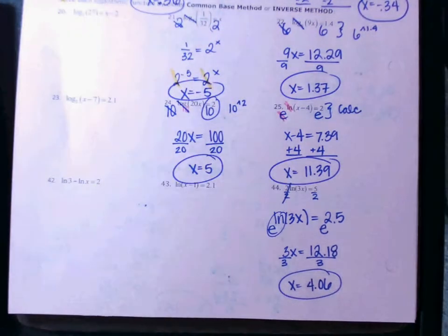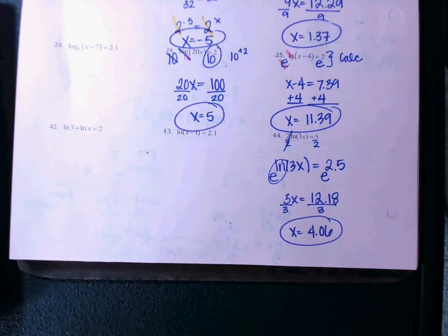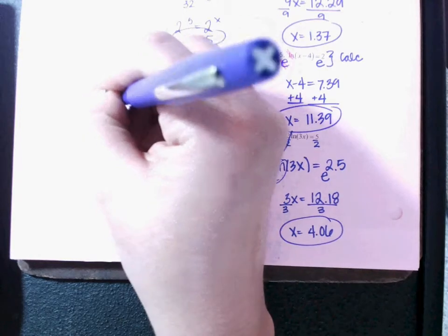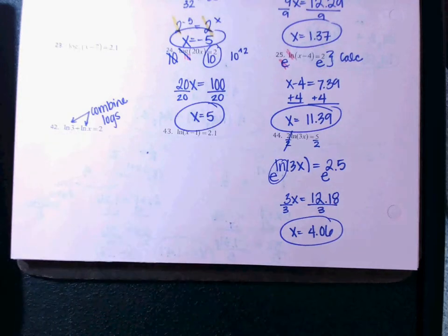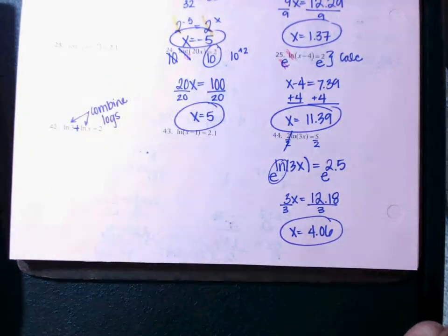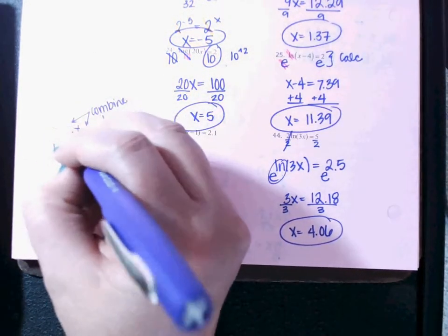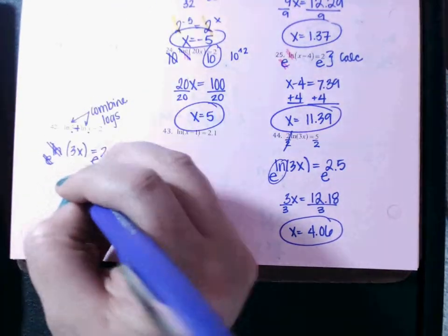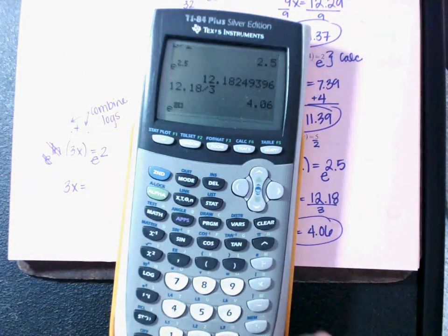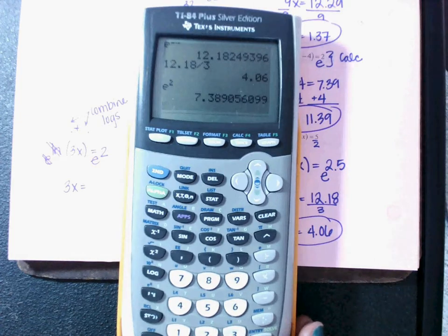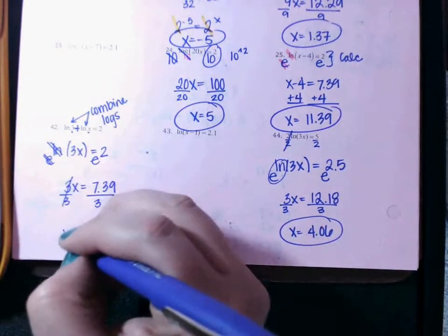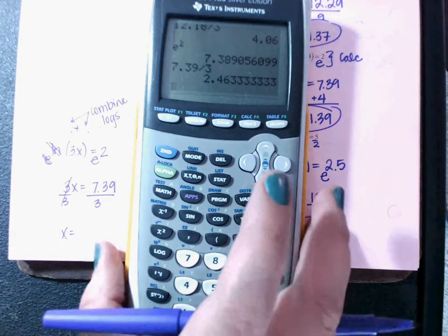It looks like most answers on your semester exam are rounded to two decimal places, so rounding to 2 is fine. Last one we're going to do together is number 42. You need to combine these logs before you can e both sides. If it's ln of 3 plus ln of x — a plus in the middle means multiply — so it becomes ln of 3x. Then e both sides: e and ln cancel, 3x comes down, and e squared is 7.39. Divide by 3 on both sides: 7.39 divided by 3 gives x equals 2.46.